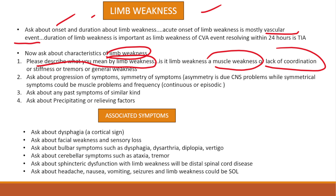Sometimes when patients are fatigued and sick, they feel weak and attribute that as limb weakness. So we have to properly establish what the patient means by limb weakness. Then we will ask about how the limb weakness is progressing. We will also ask about the symmetry of the symptom, because asymmetrical weakness is a sinus problem, while symmetrical weakness can be some other problems.